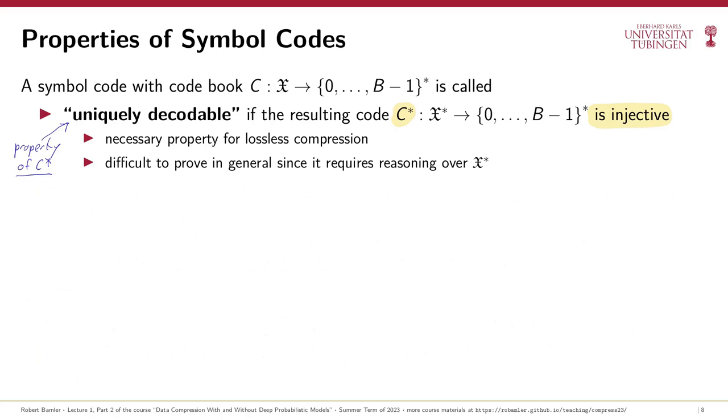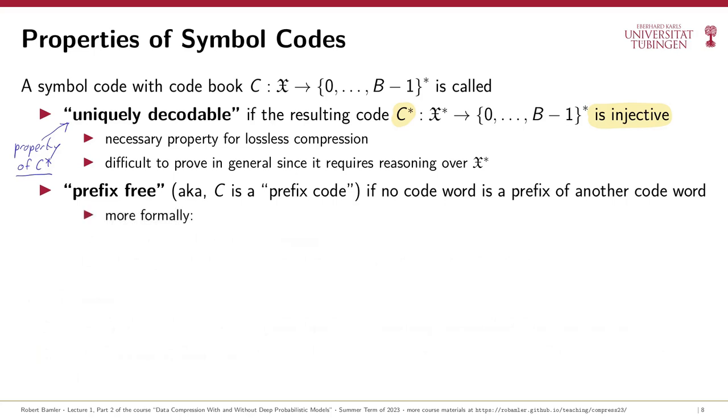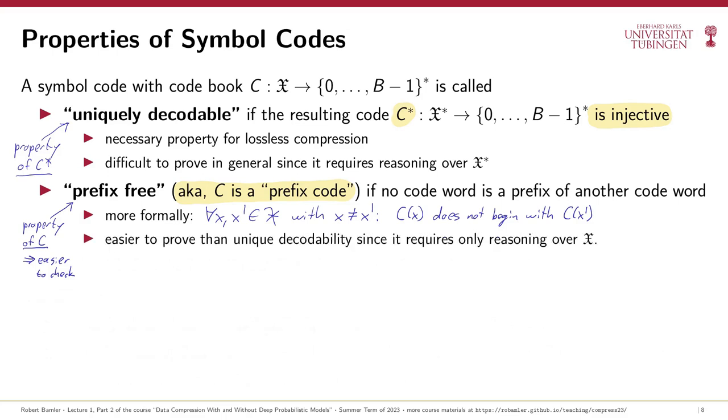Fortunately, there's a property of symbol codes that's easier to analyze, and we'll see that it gets us just as far in some sense. We say that a symbol code is prefix-free if no codeword is the prefix of another codeword. So, more formally, for any two symbols x and x' in the alphabet, the codeword for one symbol does not begin with the codeword for another symbol. Prefix-free symbol codes are also called prefix codes, even though it kind of sounds like that would mean the opposite. The nice thing about prefix-freeness is that it is the property of the codebook c rather than the code c star. And this makes it much easier to check whether a symbol code is prefix-free. You only have to compare all pairs of codewords rather than all pairs of encoded messages. And you'll also see on problem set 0 that prefix codes are easier to decode than non-prefix codes.